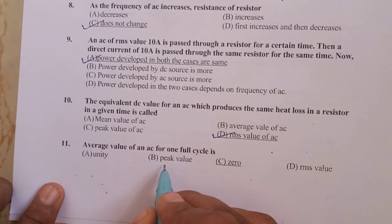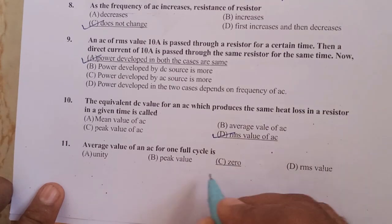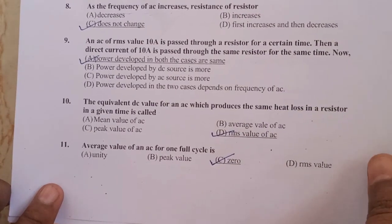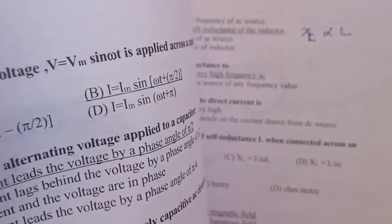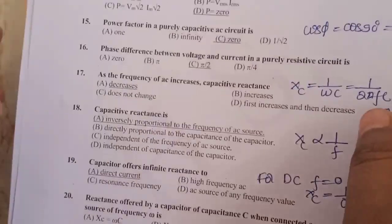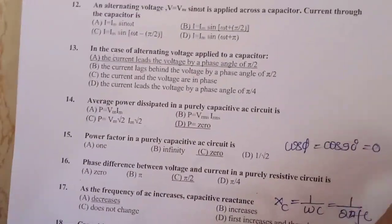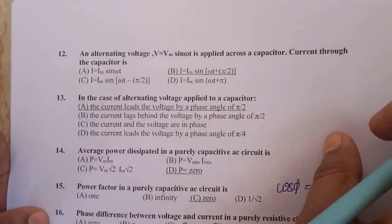Average value of AC for one full cycle is equal to 0, because there will be positive and negative cycles and both will be the same, so they cancel out.